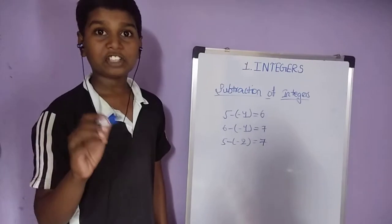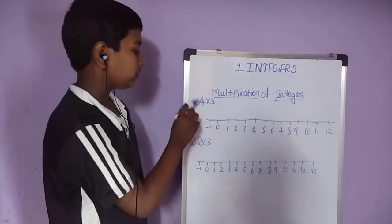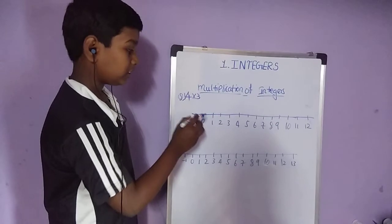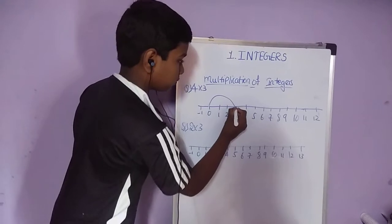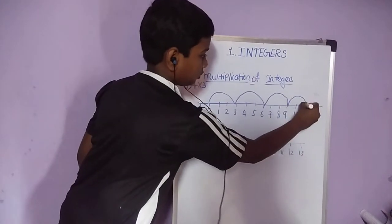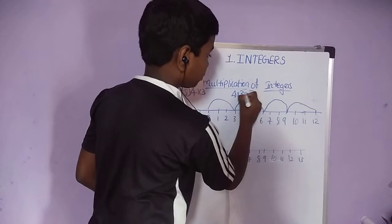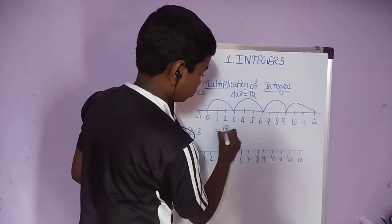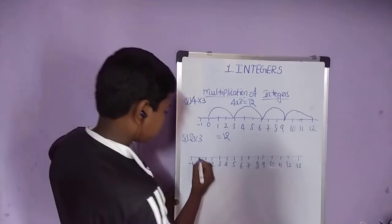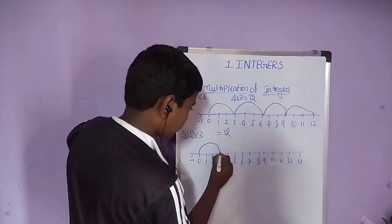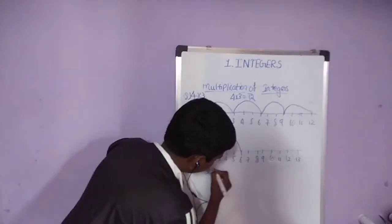We will do multiplication of integers. Let us take an example: 4 into 3. On your number line, we have to take 4 into 3, four times on your number line: 3, 6, 9, 12. So 4 into 3 is equal to 12. Another example: 2 into 3 means 2 times on your number line: 3, 6. So 2 into 3 is equal to 6.